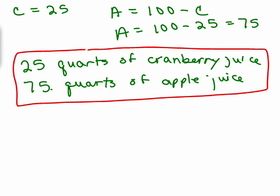Now, since C equals 25, we go back to our substitution: A equals 100 minus C. Plugging in 25 for C gives A equals 75. C stood for the amount of cranberry juice, so we need 25 quarts of cranberry juice and 75 quarts of apple juice.